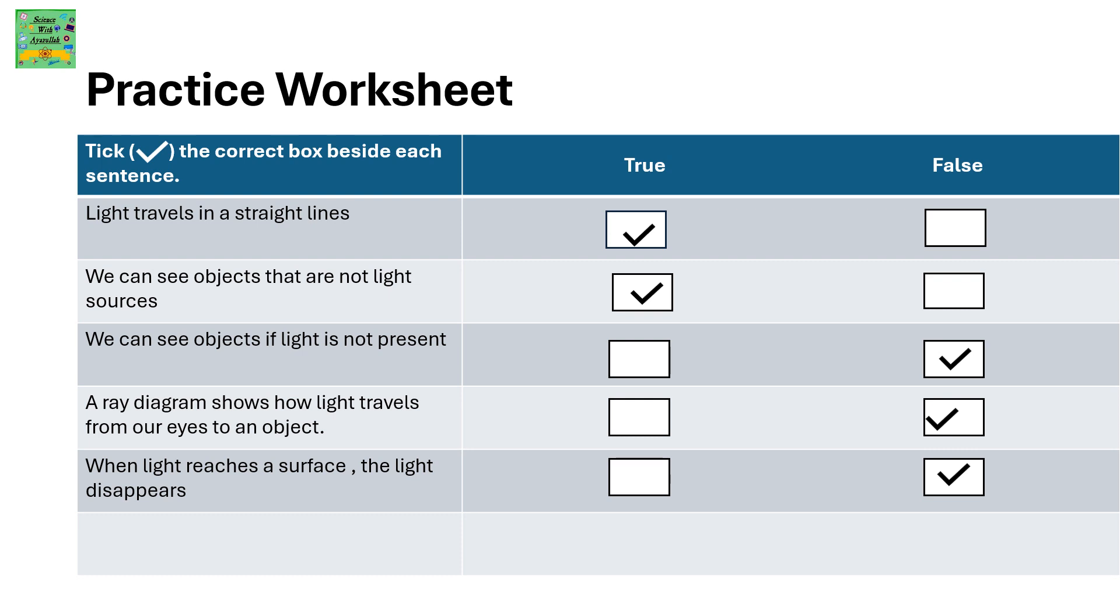You cannot see anything in a dark room where there is no light present. A ray diagram shows how light travels from our eyes to an object. False.